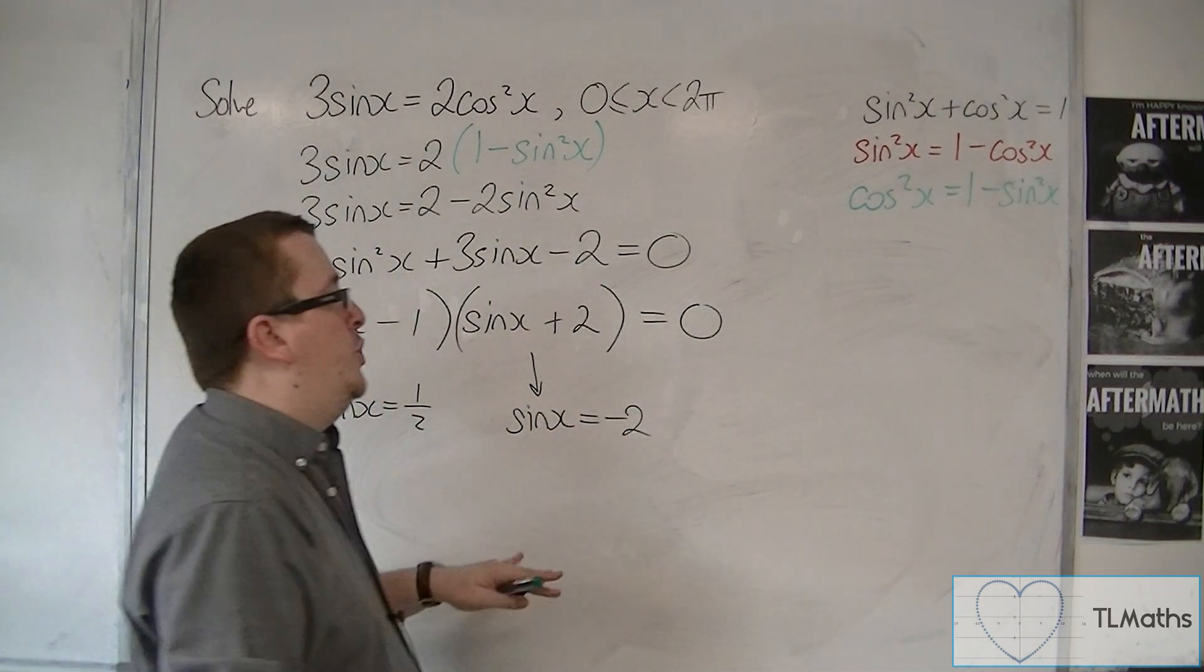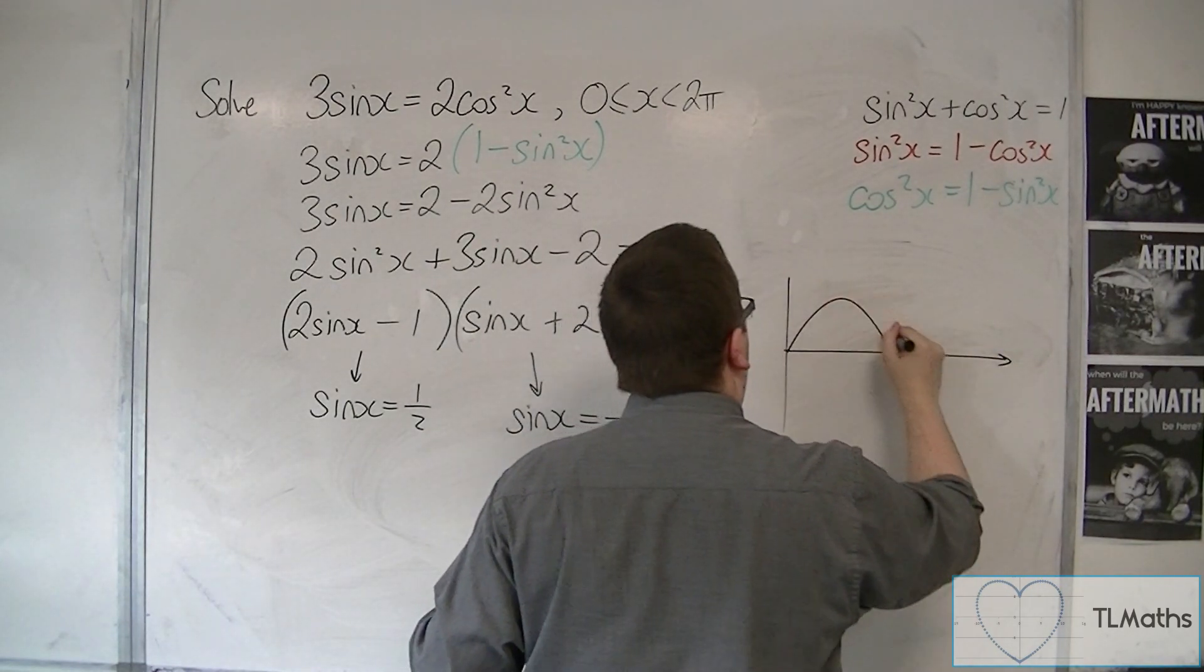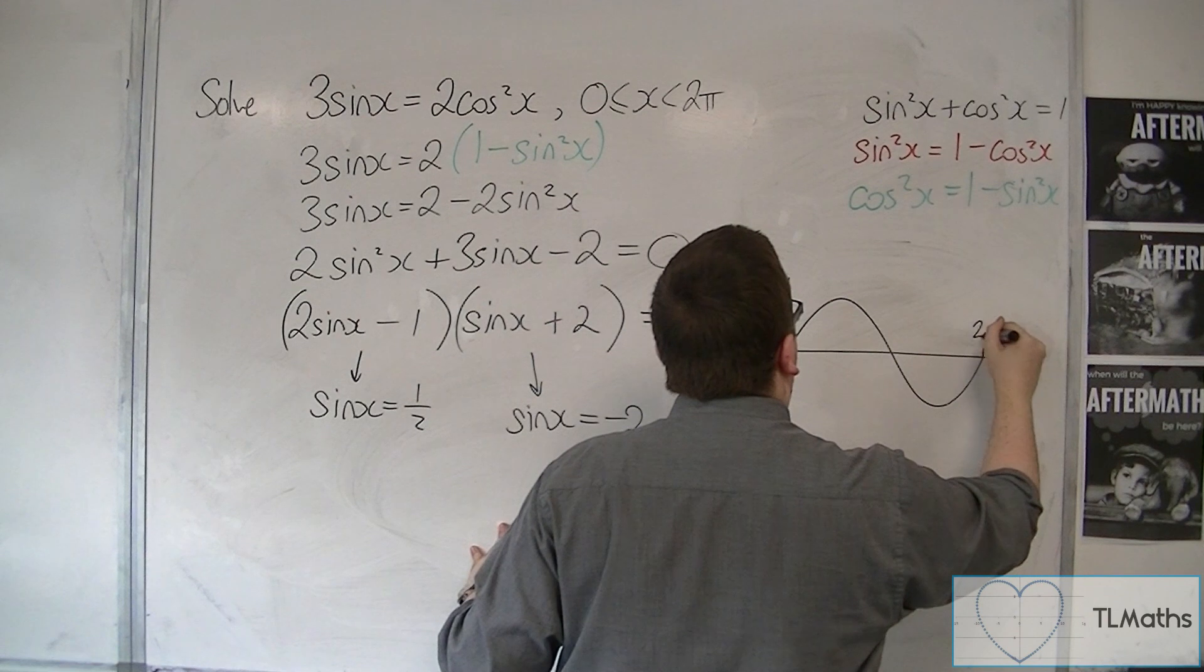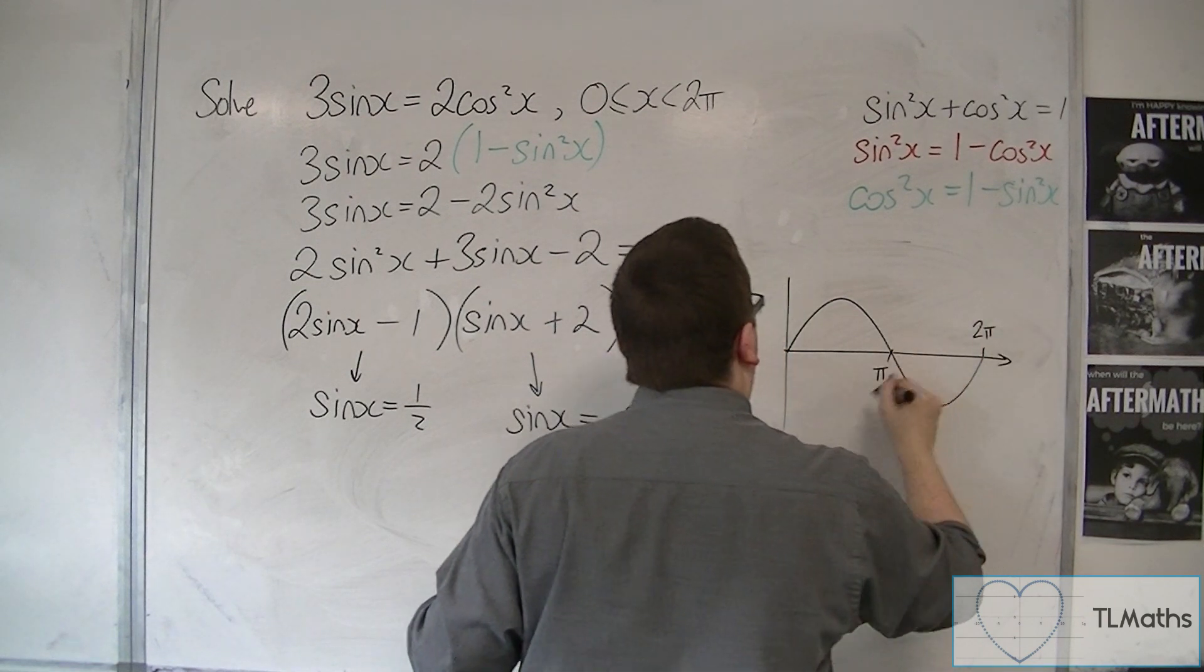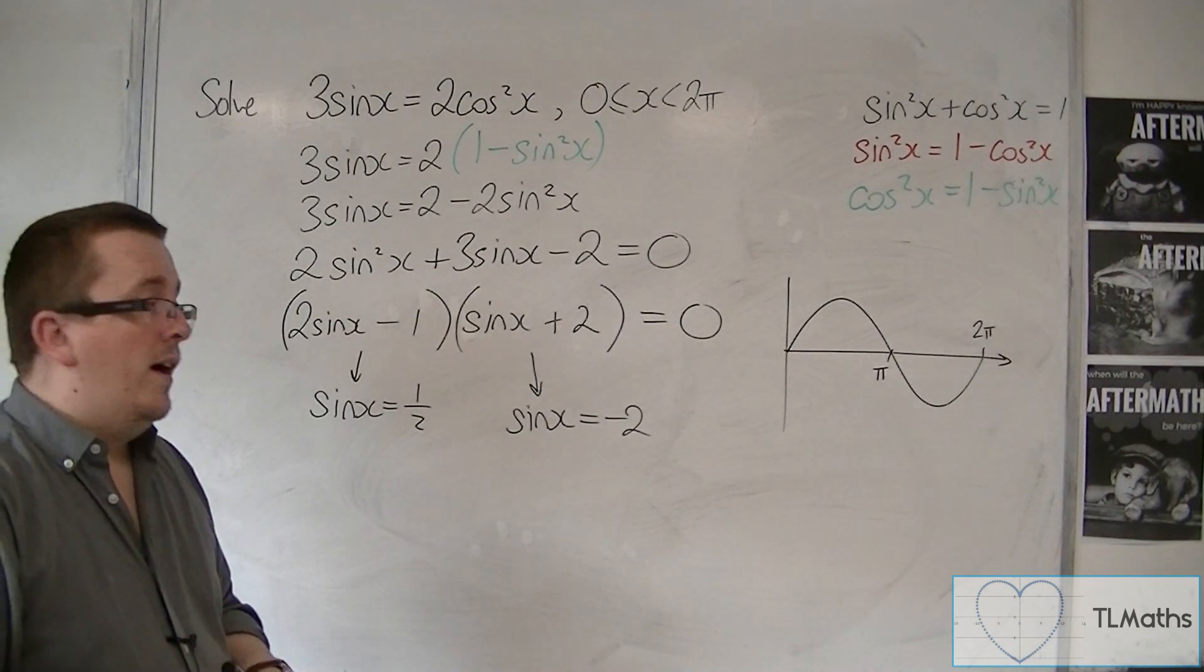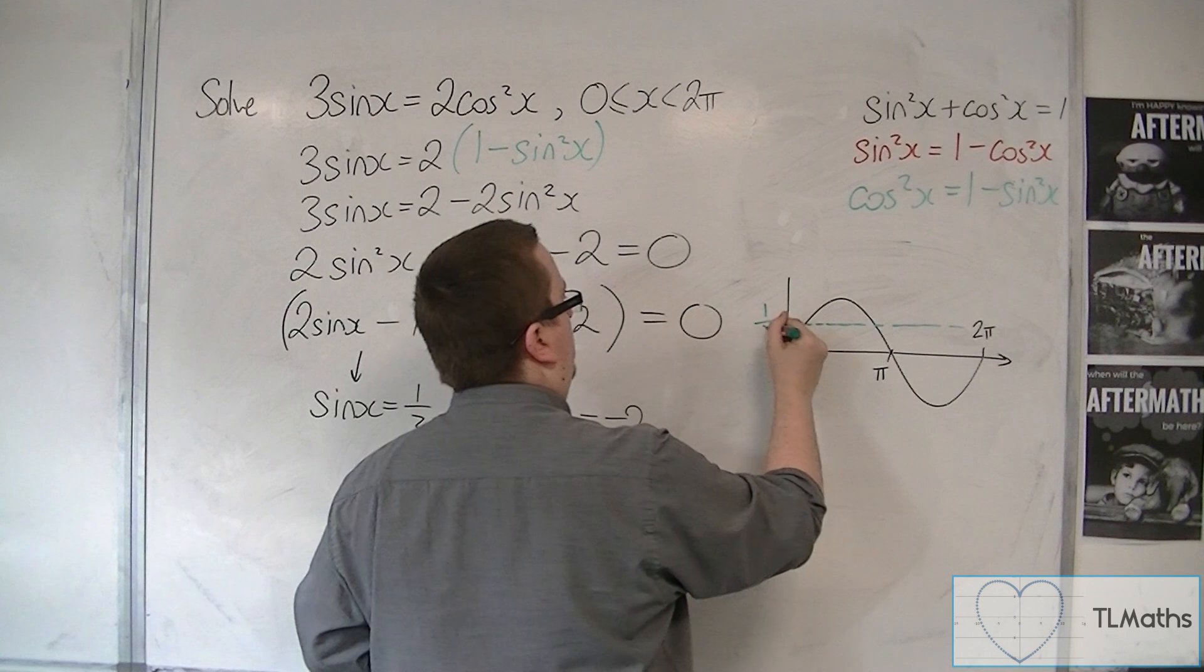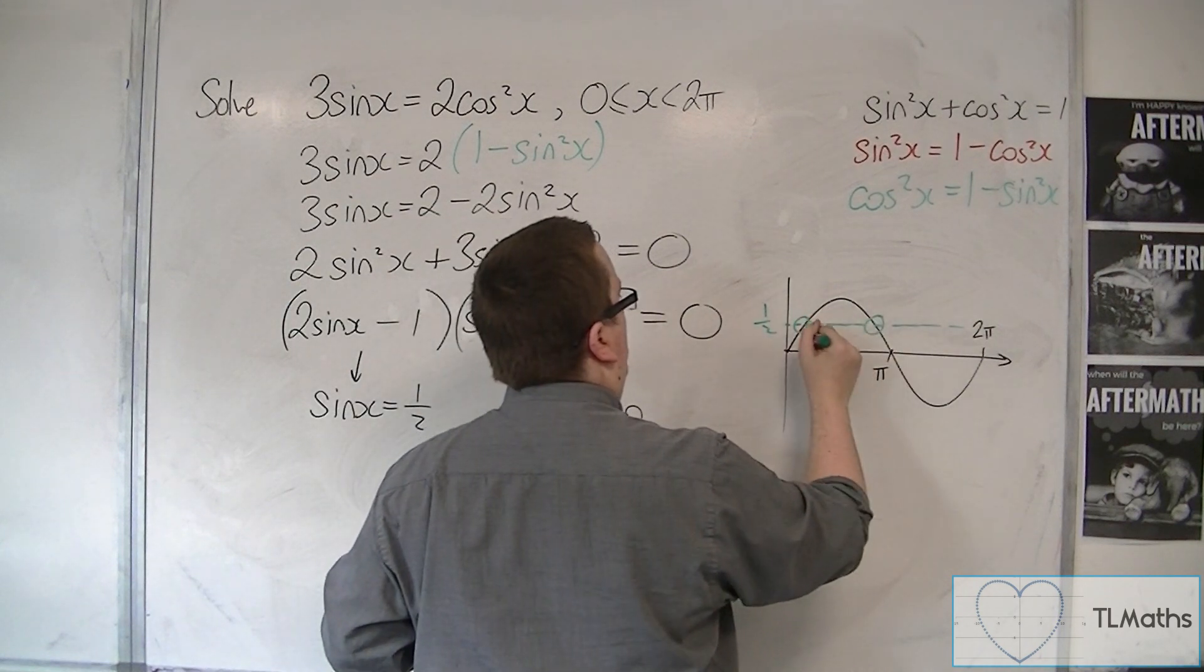So now let's sketch sine. So sine x between 0 and 2 pi looks like that. If I draw in the horizontal line of 1 half, that is this line here. So there are my two solutions.